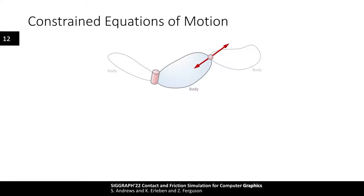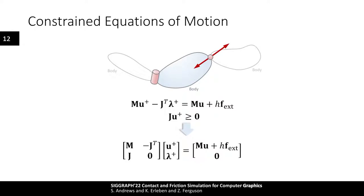This allows us to substitute the constraint impulses with the J-transposed lambda term in the equations of motion. Since it involves an unknown quantity, we move it to the left-hand side. Putting this all together, we have two equations: the dynamical equation of motion including the constraint forces, and the kinematic constraint equation defining restrictions on body velocities. Conveniently, this may be rewritten as a linear system in matrix form, though we lose the inequality on the kinematic constraint equations for the gap function — this will be handled later using an auxiliary variable. Lambda must remain non-negative.